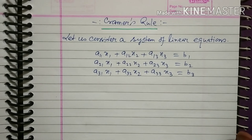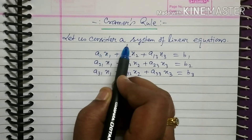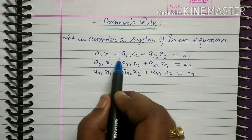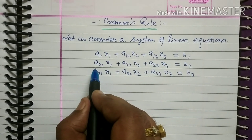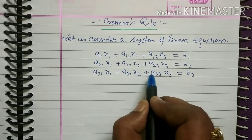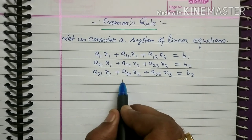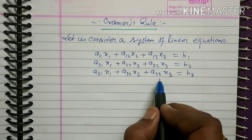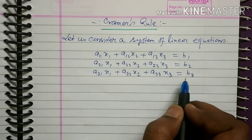Here I am going to discuss Cramer's rule, by which you can solve a system of linear equations. Let us consider a system of linear equations: a11x1 plus a12x2 plus a13x3 equals b1, a21x1 plus a22x2 plus a23x3 equals b2, a31x1 plus a32x2 plus a33x3 equals b3.